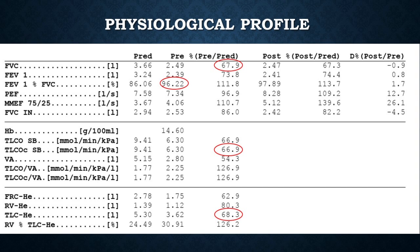With a normal FEV1/FVC ratio, you are not dealing with obstruction but restriction. Everything other than the ratio uses percentage predicted — normal is 80% or above. The FVC here is below 80%, indicating mild restriction. Classification: 60–80% is mild, 40–60% moderate, less than 40% severe. The next step is total lung capacity (TLC) — if reduced, it confirms true restriction. Then look at DLCO: use the corrected single-breath value adjusted for haemoglobin and alveolar volume. Here, TLC at 68% and reduced DLCO confirm a mild restrictive process with impaired diffusion capacity.